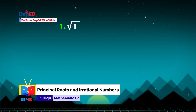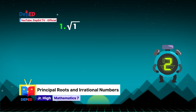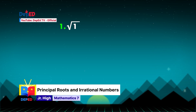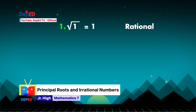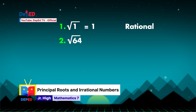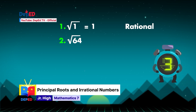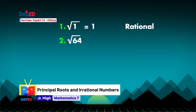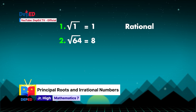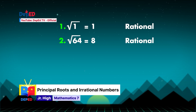Number 1: square root of 1. Timer! Raise your answer! The correct answer is: since we have extracted a rational number, which is 1, therefore we can say that the principal root of the square root of 1 is rational. Number 2: square root of 64. Timer! Raise your answer! Since we have extracted a rational number, which is 8, therefore the principal root of the square root of 64 is rational.